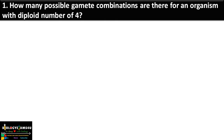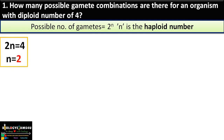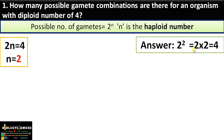Question number one: how many possible gamete combinations are there for an organism with a diploid number of 4? The simple formula is: possible number of gametes equals 2 raised to n, where n is the haploid number. In this case the diploid number is 4, therefore the haploid number is 2, so the answer is 2 raised to 2.